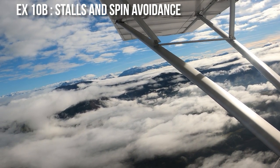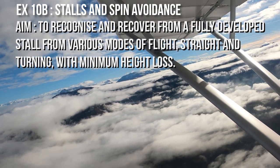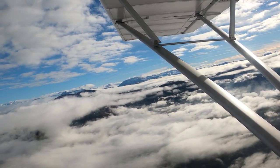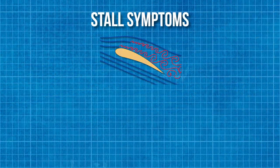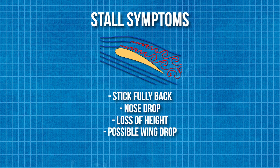The aim of this exercise is to recognize and recover from a fully developed stall from various modes of flight — straight and turning — with minimum height loss. Let's begin by looking at the indications of a stall. Different to slow flight, when we are in a stall the stick is not only all the way back but the nose will be dropping at the same time. With the stick fully back you could be losing height and there is a chance that a possible wing drop may occur.